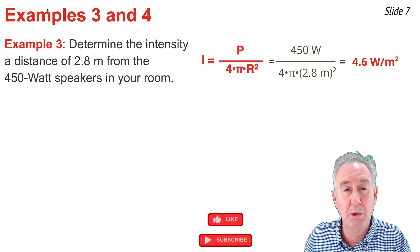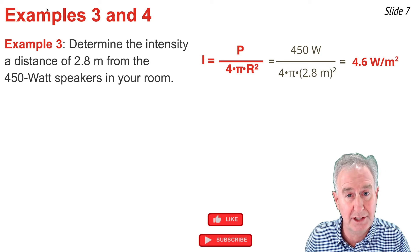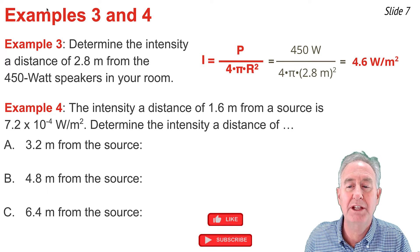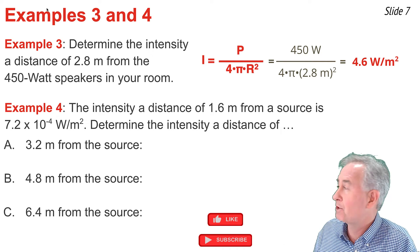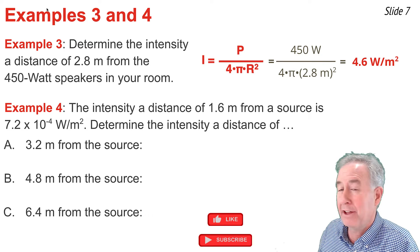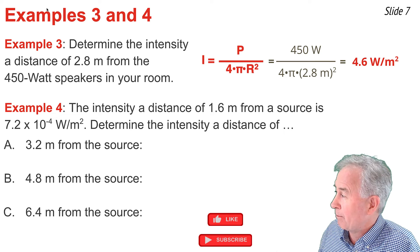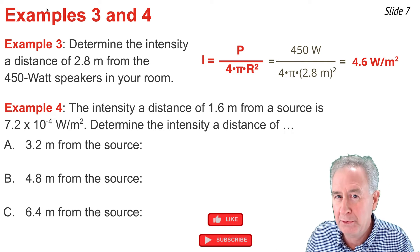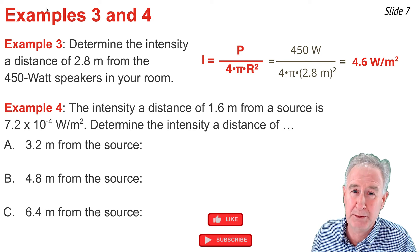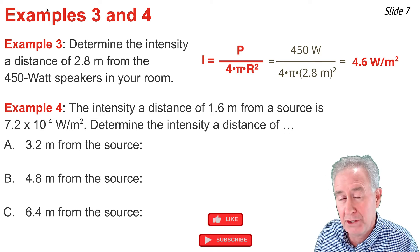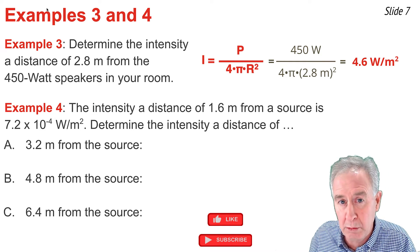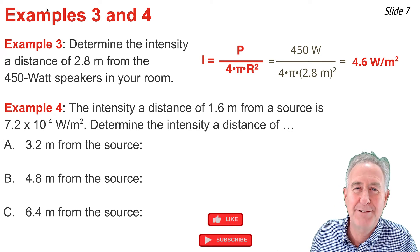In Example 4, we use this equation as a guide to proportional thinking about how variations in distance affect intensity. Given that the intensity is 7.2×10⁻⁴ watts per meter squared at 1.6 meters from a source, find the intensity at 3.2 meters (Part A), 4.8 meters (Part B), and 6.4 meters (Part C). Notice that 3.2 is 2× the given 1.6, 4.8 is 3×, and 6.4 is 4×. So the problem asks for the effect of doubling, tripling, and quadrupling the distance upon intensity.